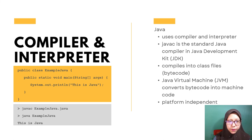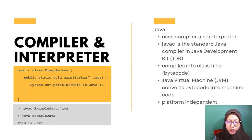In Java, javac is the standard Java compiler included in the Java Development Kit (JDK) from Oracle Corporation. The javac command reads source files containing module, package, and type declarations written in the Java programming language and compiles them into class files or bytecode that run on the Java Virtual Machine (JVM). Although bytecode is similar to machine language, it is not the machine language of any actual computer.